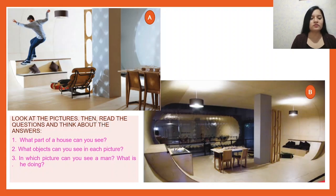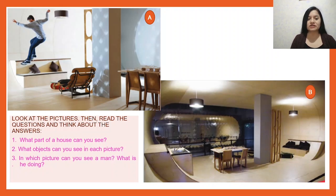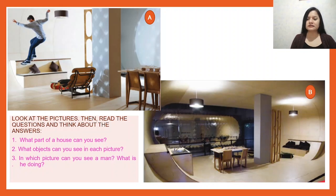What objects can you see in each picture? Can you tell me? Can you mention all the words that you can see in both pictures? For example, I can say: table, chairs, cushions, walls, lights, and a lot more.